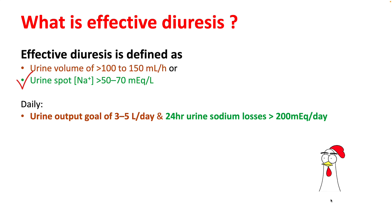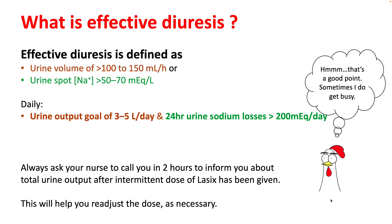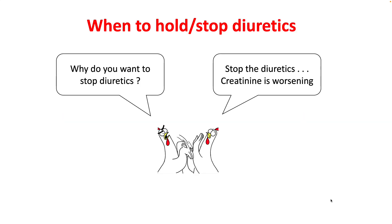On a daily basis, a urine output goal of 3 to 5 liters per day with 24-hour urine sodium losses more than 200 mEq per day constitutes effective diuresis. Always ask your nurse to call you in a couple of hours to inform you about the total urine output after the dose has been started, so you can readjust the dose — because most of the time we do get busy and this slips out of our mind.